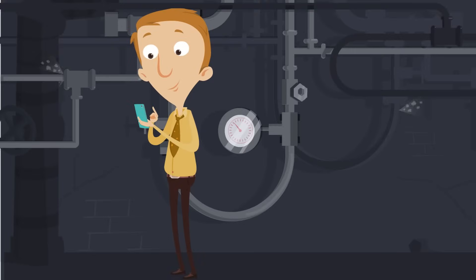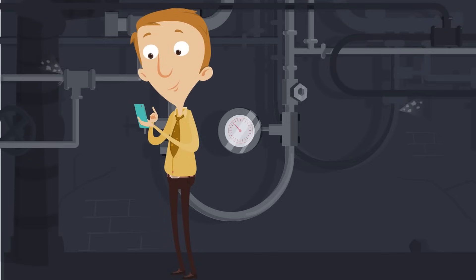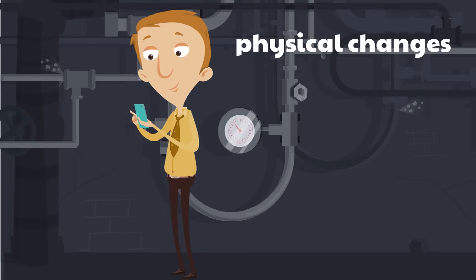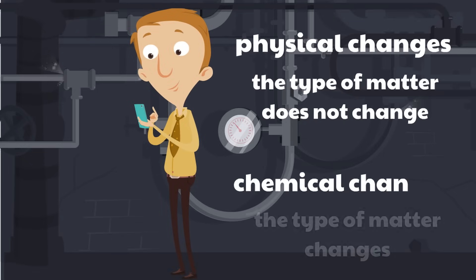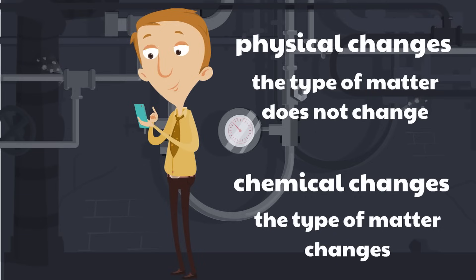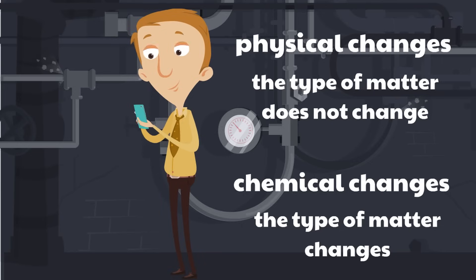That's all for our lesson today. We see matter every day — the Earth is full of stuff, and it's called matter. There are changes that happen: physical changes, which don't change the type of matter, and chemical changes, which are so big they actually change the type of matter. Physical and chemical changes. Thanks for watching, and we hope to see you next time.